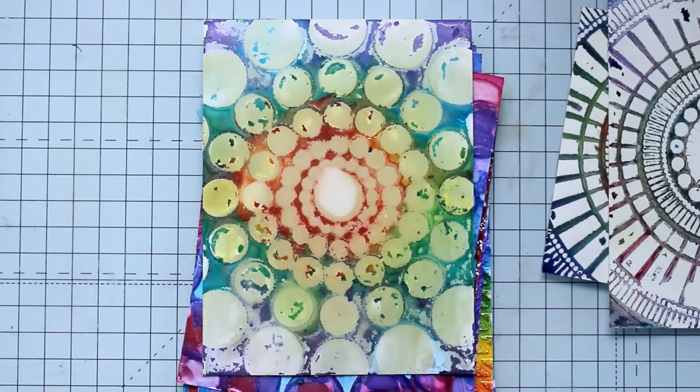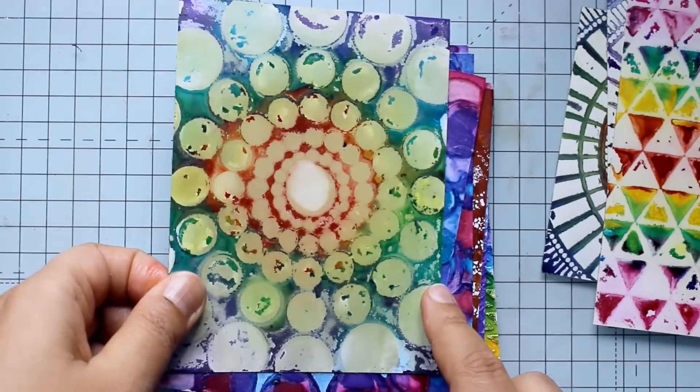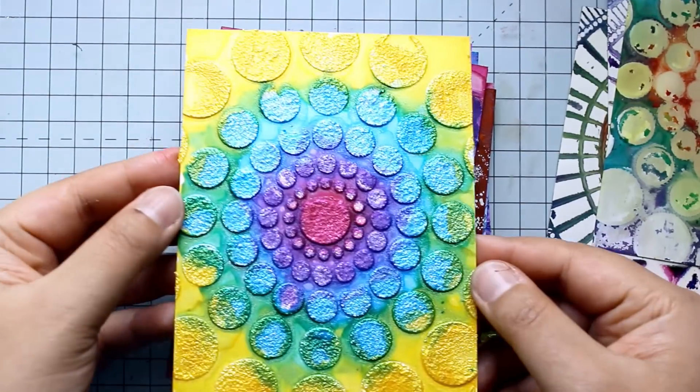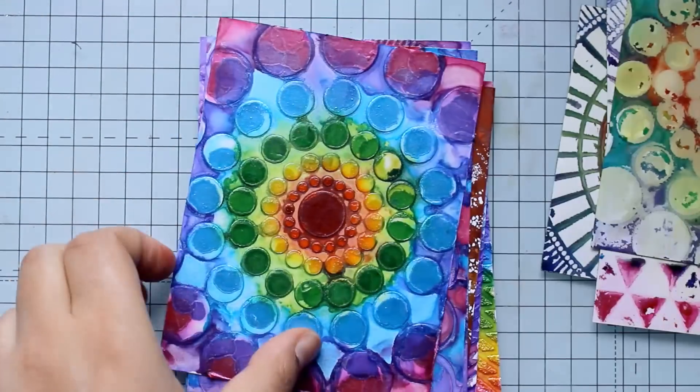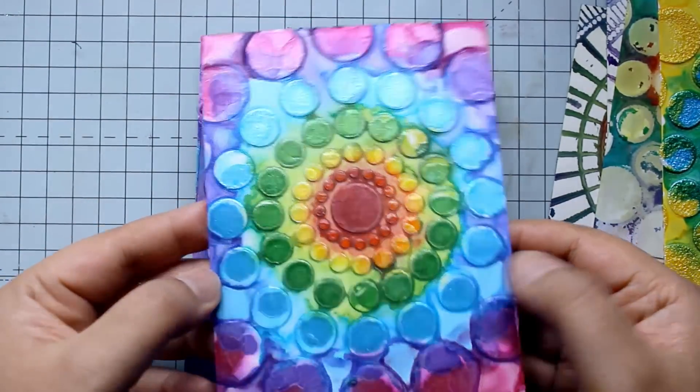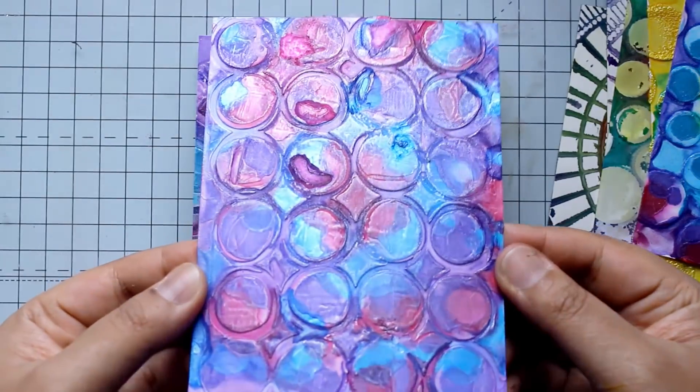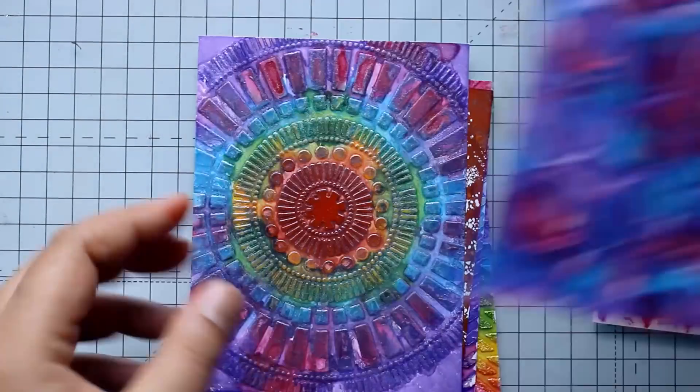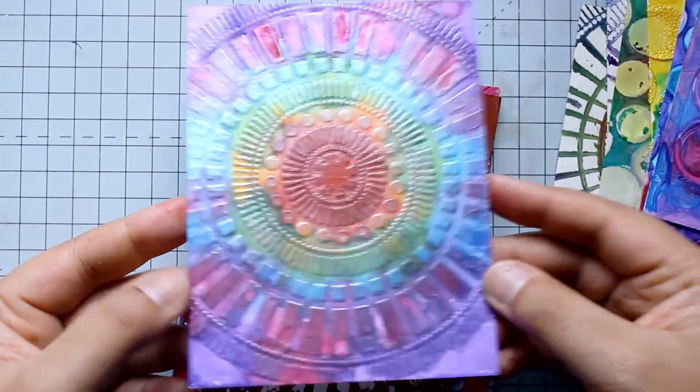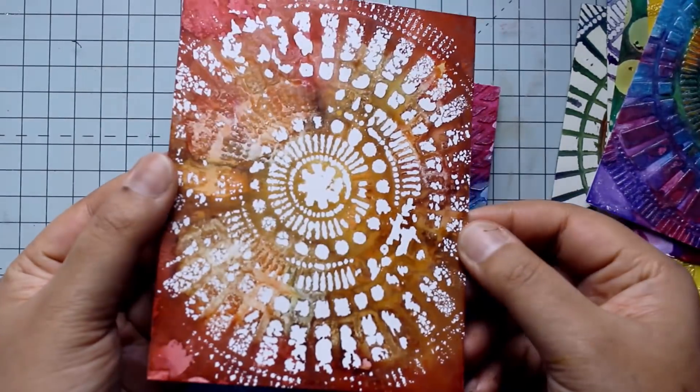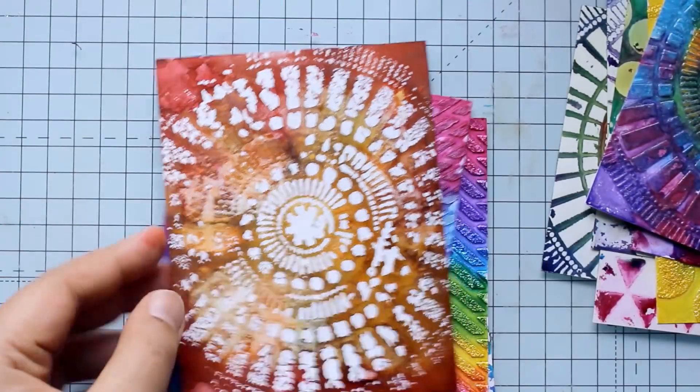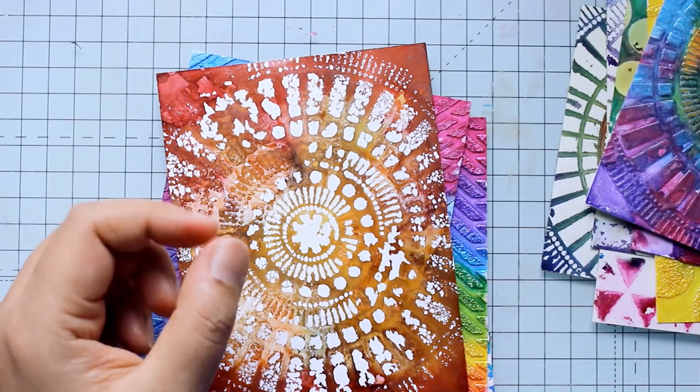Here are some of the backgrounds that I made. This was done with heavy body gloss gel, this was done with light texture paste and this next one I spritzed through a stencil some distress resist spray and once they're dried I put on the alcohol pearls and rubbed them on.